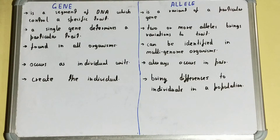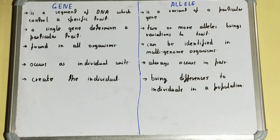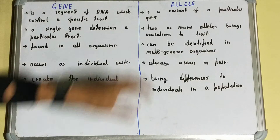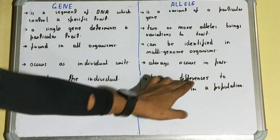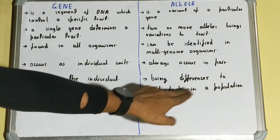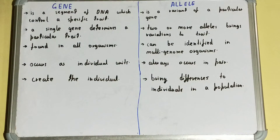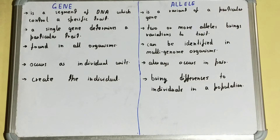A gene creates the individual, but an allele brings differences to individuals in a population. So it makes each individual different within a population with the help of alleles.